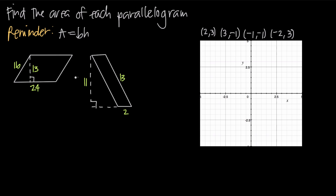A parallelogram is a special type of quadrilateral, meaning it's a four-sided polygon. Not only is it four-sided, but opposite sides are congruent and opposite sides are parallel. So the top and bottom sides have the same length, and the left and right sides have the same length. That's how we define a parallelogram.